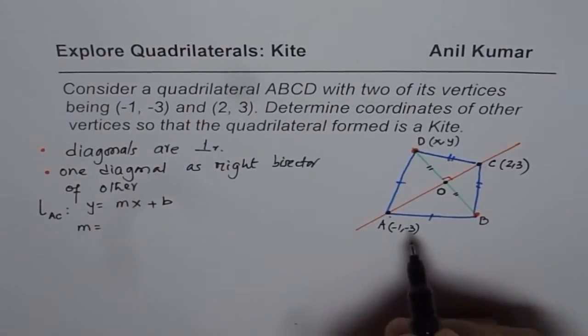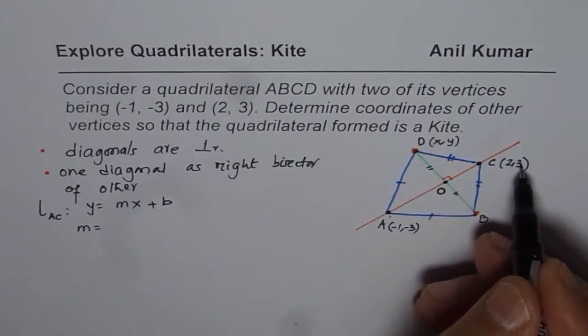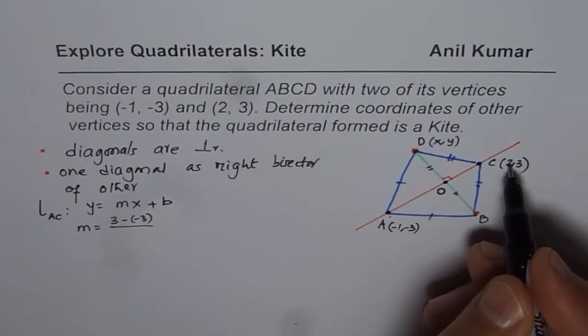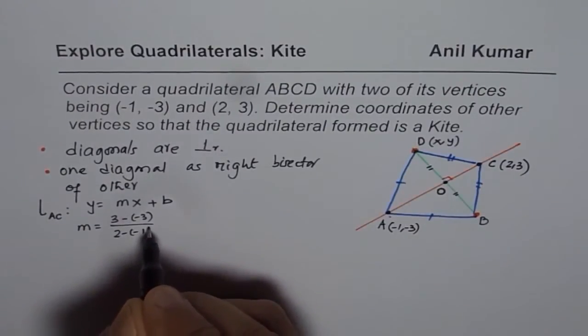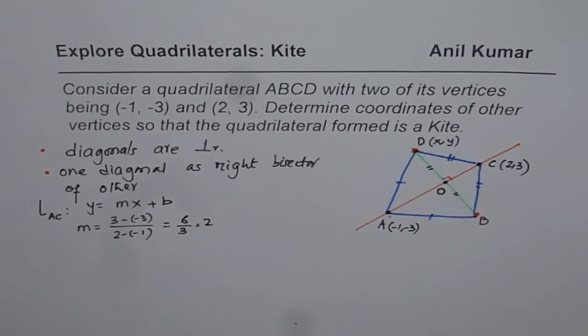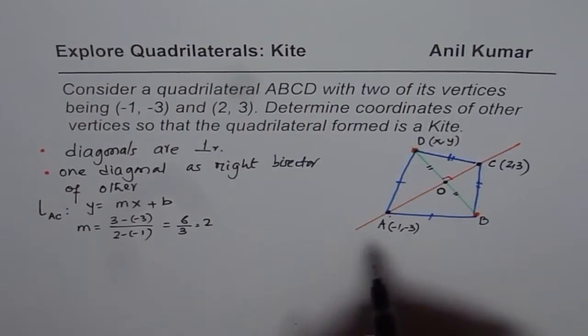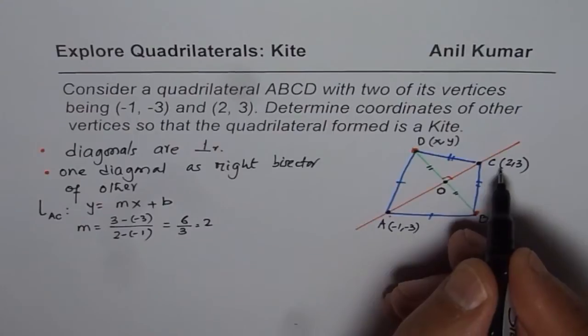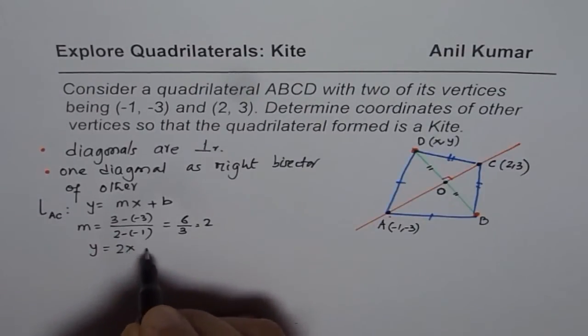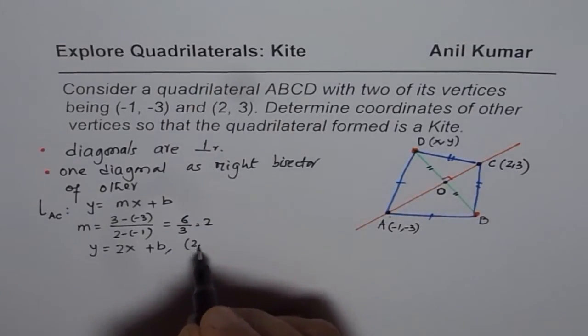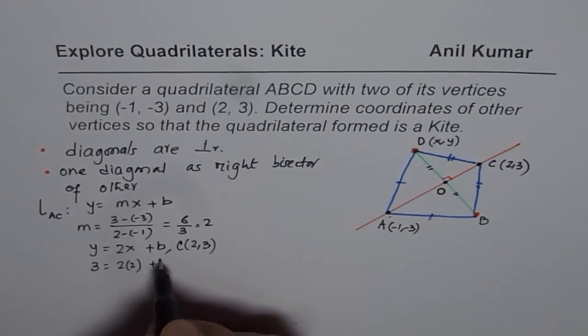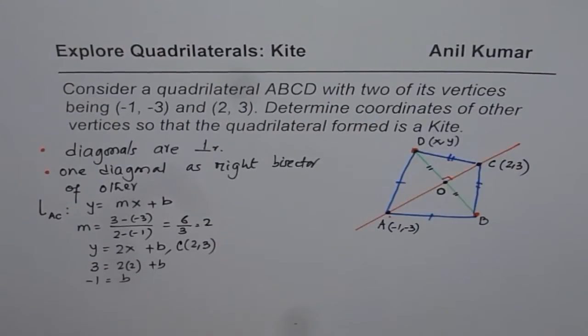Slope of this line M will be rise over run. That is Y2 minus Y1. That means 3 minus (-3), that is the difference in Y values. And difference in X values, 2 minus (-1). And that gives us slope of 6 over 3, which is 2. So we get slope of 2. To get the equation, I can use one of the coordinates. Let (2, 3) be a coordinate. Using the point (2, 3), we have the equation Y equals to 2X plus B. To find B, we are using the coordinates (2, 3), which happens to be for the point C. So 3 is Y value, 2 is X value. So we can bring it here, and then we get -1 as B.